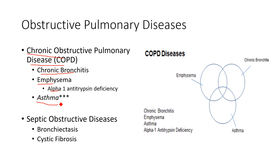There are also septic obstructive diseases: bronchiectasis and cystic fibrosis. Bronchiectasis can be an acute change or chronic, and usually occurs secondary to another condition like cystic fibrosis. Septic obstructive diseases could fall under the category of COPD, but they're a little different because their hallmark sign is really excessive secretion, mucus production, purulent sputum, and a high incidence of infection — a bit different than COPD in the classic sense.